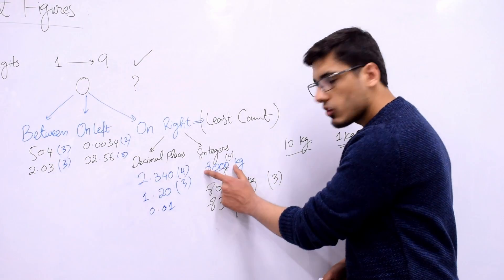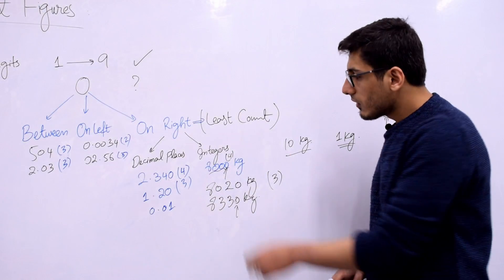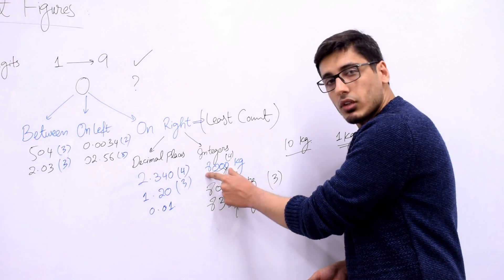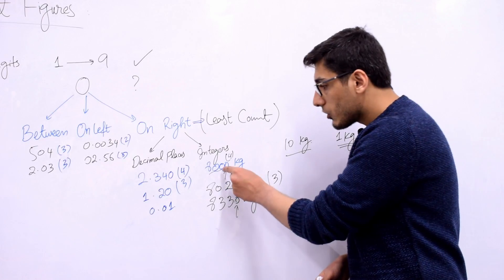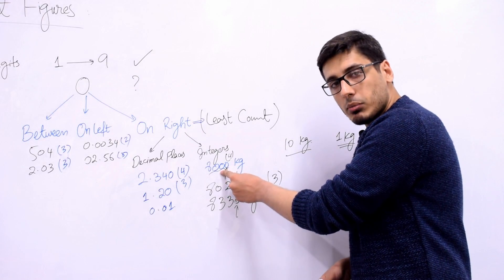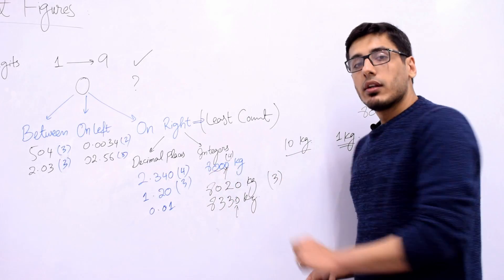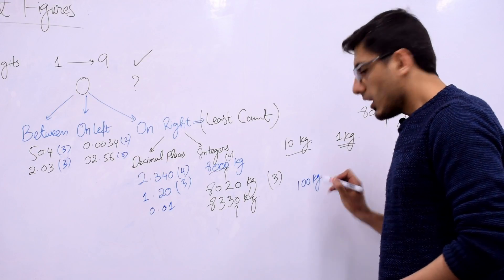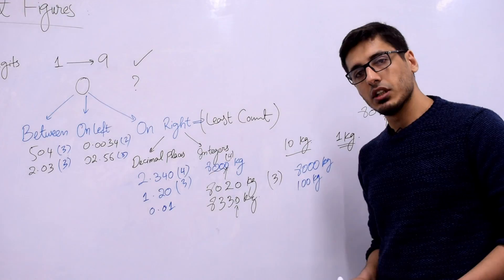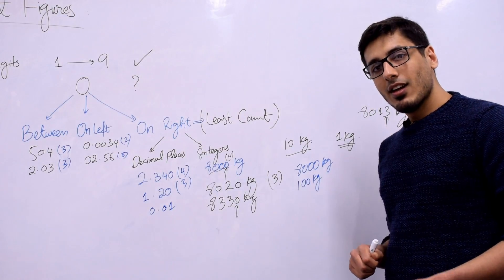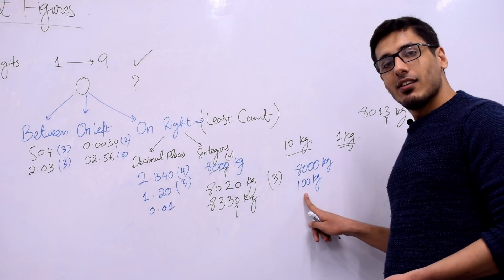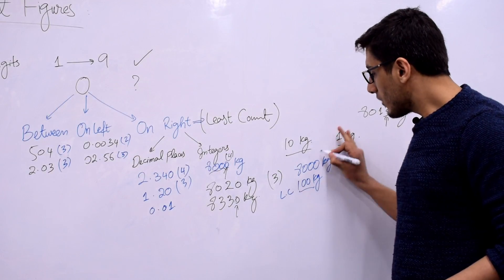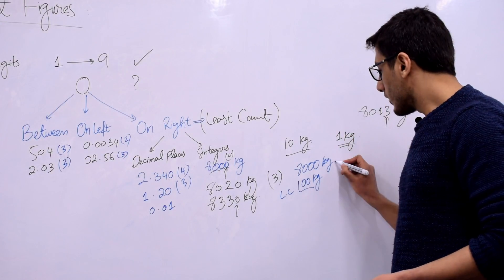To summarize: if you have zeros on the right side of your reading, look at the least count. If the least count reaches down to 1 kg, count that zero as significant — total significant figures: 4. If the least count only goes to 10 kg, that zero is not significant — total significant figures: 3. Now a question: what if the least count is 100 kg and the reading is 8,000 kg? You would neglect two zeros, giving you only 2 significant figures.